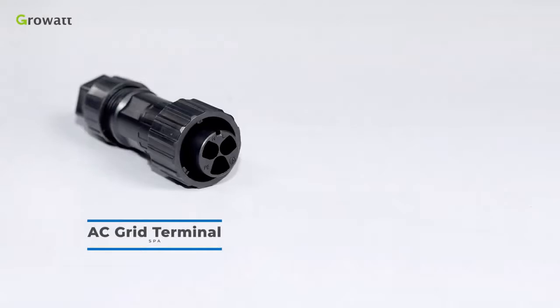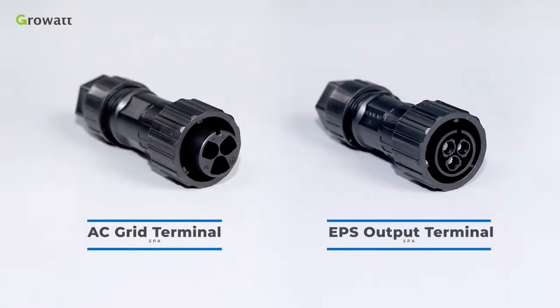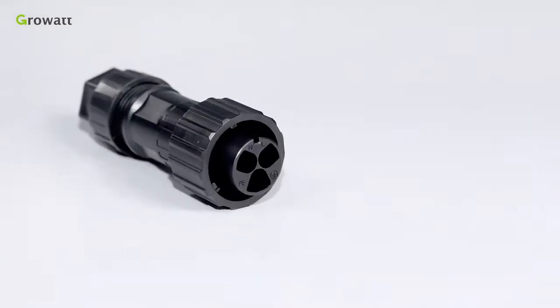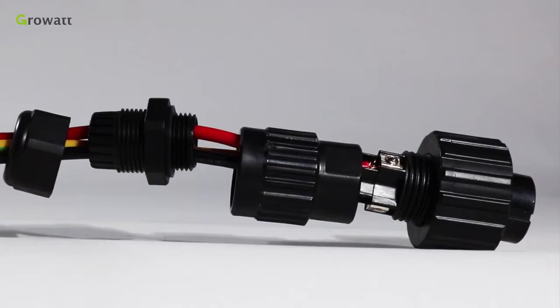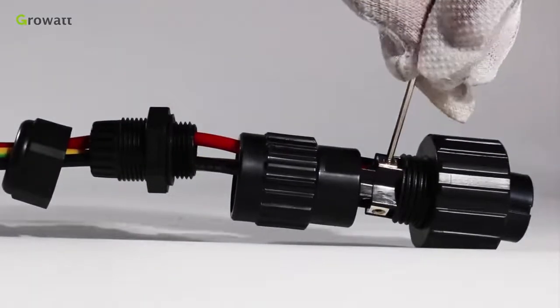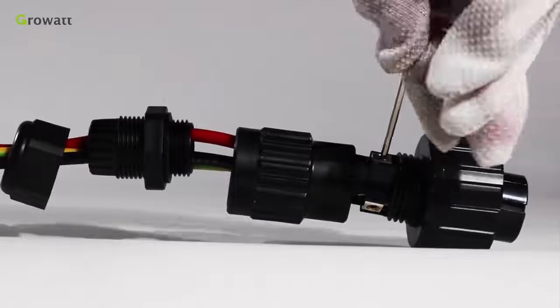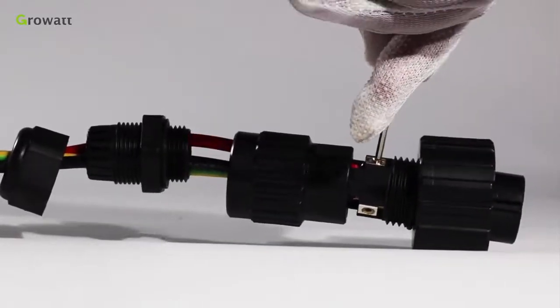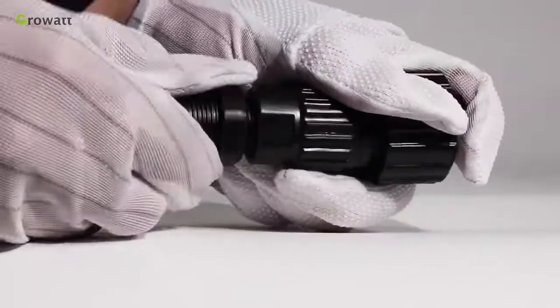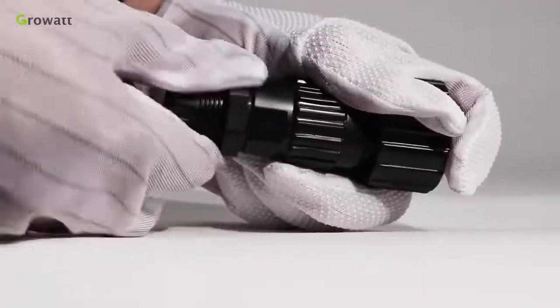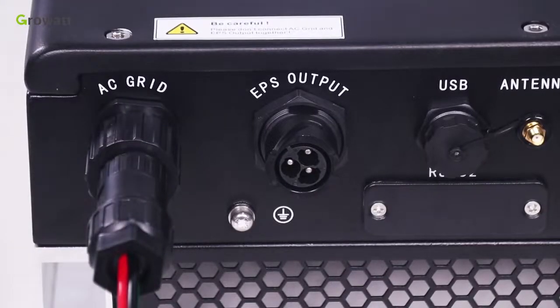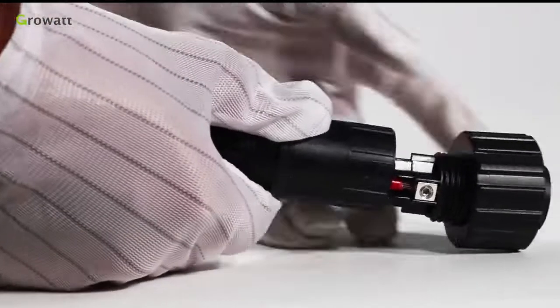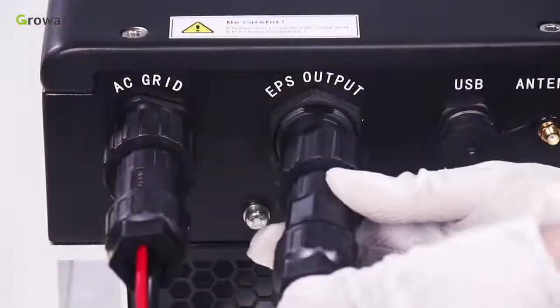SPA has an AC grid terminal and EPS output terminal. They have different appearances. Firstly, please confirm the L-N-PE port of the connection terminal. Then thread cables through pressure screw, searing, threaded sleeve in sequence. Insert cables into connection terminal according to polarities indicated on it and tighten the screws. Push and rotate the threaded sleeve onto connection terminal until both are locked tightly. Plug the socket into AC output terminal. Clockwise rotation to tighten the socket. Counter-clockwise rotation to loosen the socket. The EPS terminal connection is the same as the on-grid terminal installation.